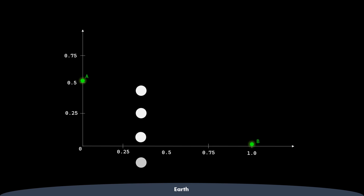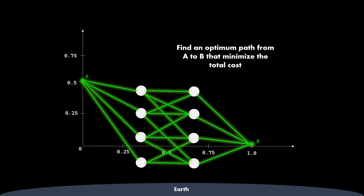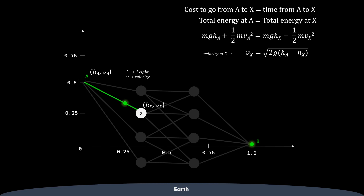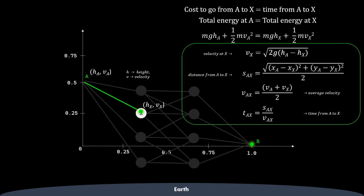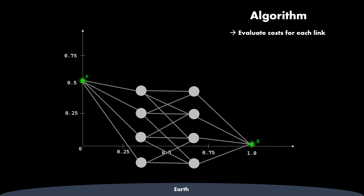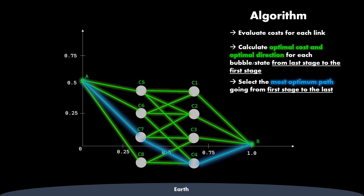We form two stages between A and B, and each stage has four states. This generates a bunch of possible paths from A to B — one of these paths is optimum. We need to assign costs to each link. The cost of going from A to X is the time taken to go from A to X. Applying the law of conservation of energy, the velocity at X can be calculated, and then the time taken to go from A to X is determined using these simple equations. The algorithm summary: first, evaluate costs for each link; second, calculate optimal cost for each state from the last stage to the first; lastly, select the most optimum path going from the first stage to the last.